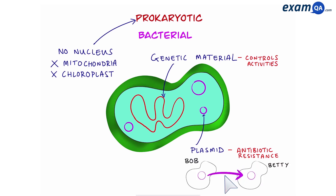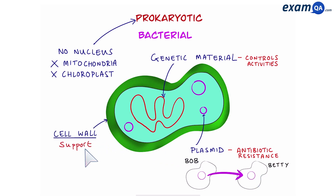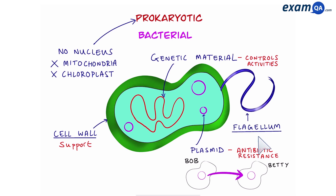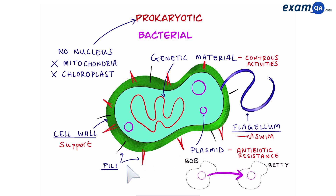Plasmids can be shared between bacteria, meaning that if one bacterium has a special characteristic, it can share that with its neighbour. A bacterial cell also has a cell wall for support; however, unlike a plant cell, it's not made of cellulose. Some bacteria have a tail-like structure called a flagellum, which helps the bacteria to swim around. Finally, these pin-like structures are called pili, and they allow the bacteria to attach and climb through organisms.